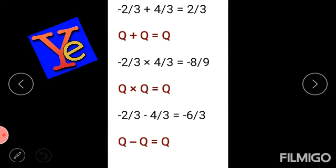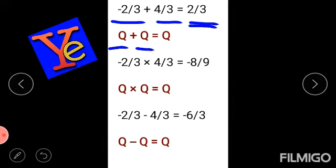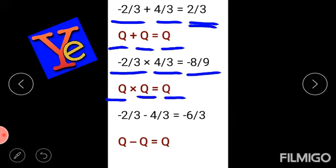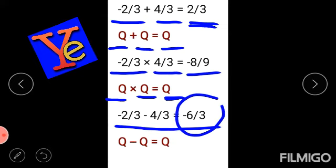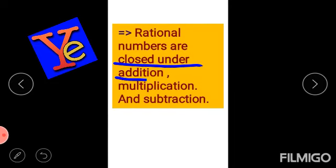Now for rational numbers: I have taken minus 2 by 3 plus 4 by 3, and I am getting 2 by 3, which is a rational number. If I multiply minus 2 by 3 with 4 by 3, I get minus 8 by 9, which is also a rational number. If I subtract them, I get a rational number again. It means rational numbers are closed under addition, multiplication, and subtraction.